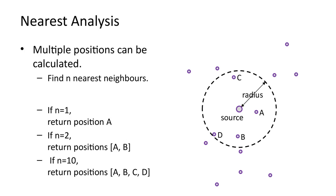A nearest analysis will first find all positions within the specified radius. In the example, we see that four positions are found. The maximum number of positions to be returned is specified as n. If the number of positions found is less than or equal to n, then all positions are returned. If the number of positions is greater than n, then the closest n positions are returned.